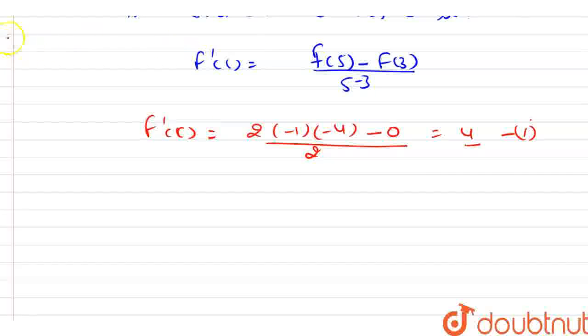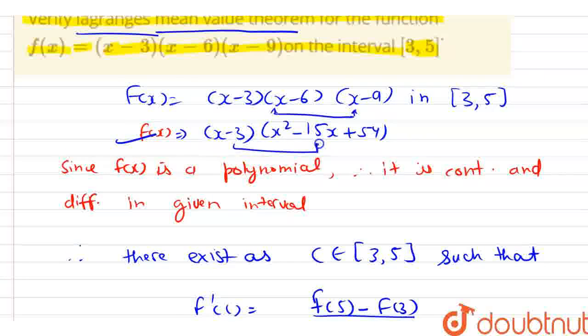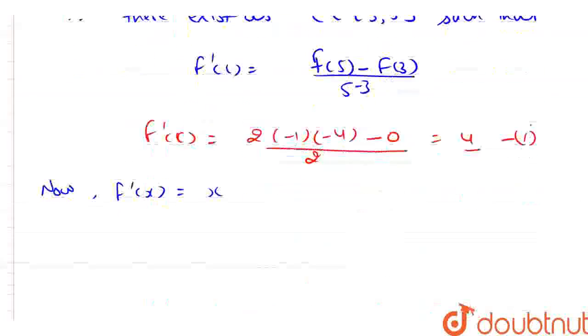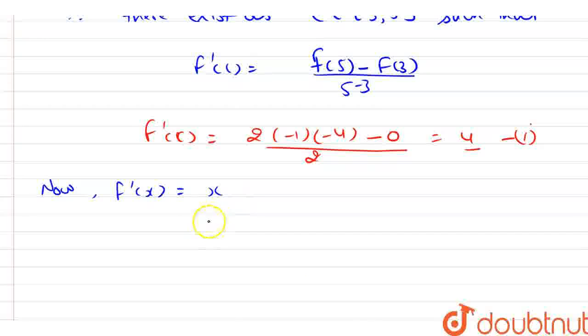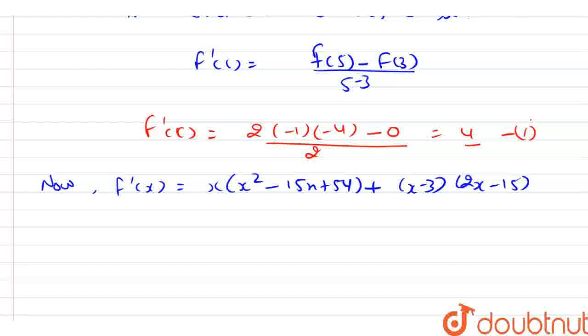Now, next, f'(x). This was our f(x). So here we will apply product rule in these two brackets. After applying product rule, here we have (x - 3)(x² - 15x + 54) + (x - 3)(2x - 15).